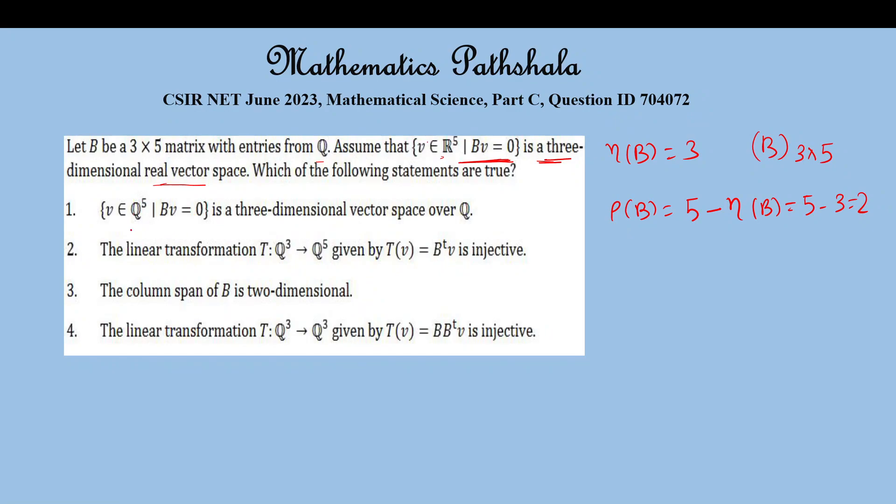Option 1: v belongs to Q5 such that Bv equals 0 is a three-dimensional vector space over Q. Since rank of B equals 2 and nullity of B equals 3 over the rational numbers, this option is true.